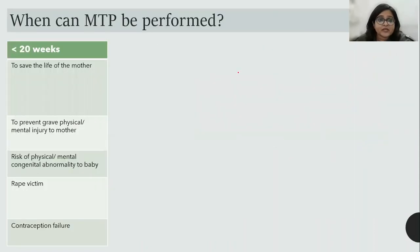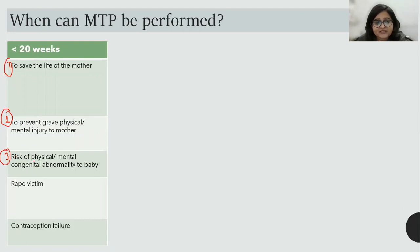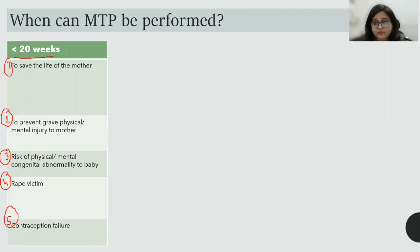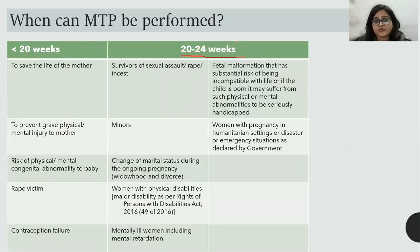Returning to the indications: less than 20 weeks remains the same as the previous MTP Act. The five indications are: to save the life of the mother, to prevent grave physical or mental injury to the mother, risk of physical or mental abnormality to the baby, rape victim, and contraceptive failure. These five remain applicable as before. What has changed is the new category of 20 to 24 weeks with select indications.